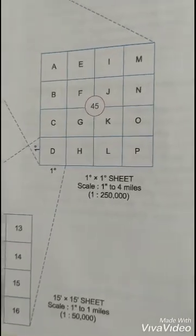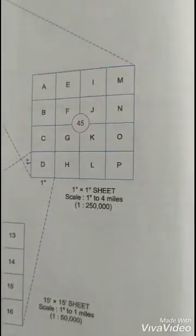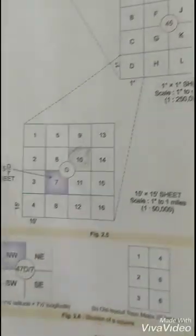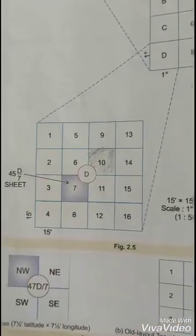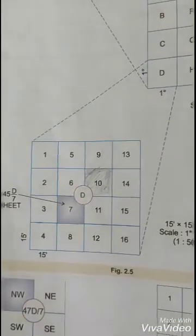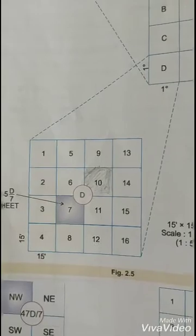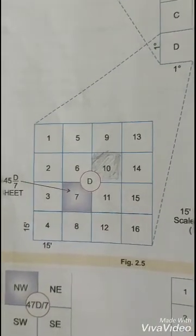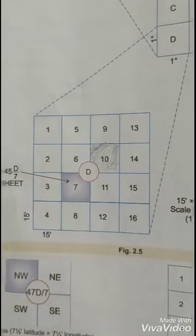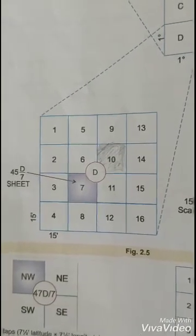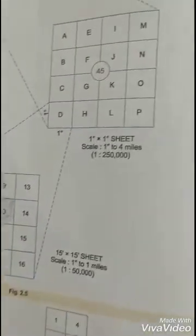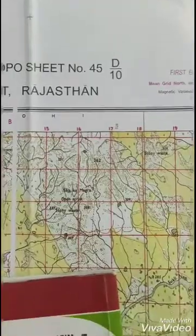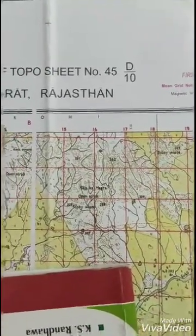We have to consider only the D part. This D part is further divided into 16 more parts. Grid 7 and grid 10 are highlighted here. So this is the part of our syllabus — grid 7 and grid 10. Our syllabus becomes 45 D 10 and 45 D 7.